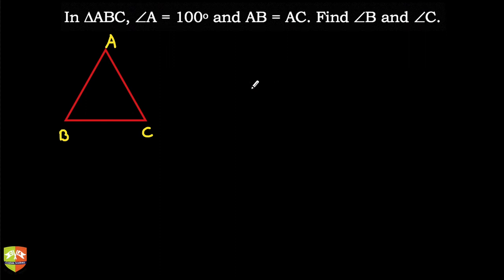Hello friends, welcome to this problem-solving session on triangles. In this question, it's given that angle A is 100 degrees — though it doesn't look like it, let me say this is 100 degrees. Angle A is 100 degrees and AB is equal to AC, so this side is equal to AC. You have to find angles B and C.